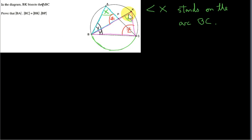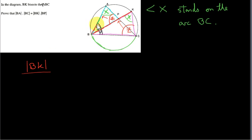Now let's look at corresponding sides in both of these triangles. Let's start with the purple triangle and take the side that's opposite Z. The side that's opposite Z in the purple triangle is BK. If we take BK and divide it by the corresponding side in the blue triangle — that's the side opposite Z in the blue triangle, which is BA — that ratio is the same for any other pair of corresponding sides in both similar triangles.